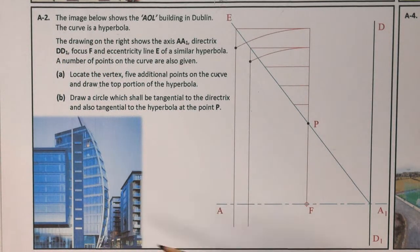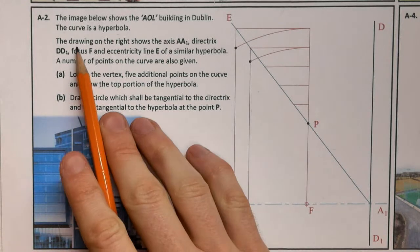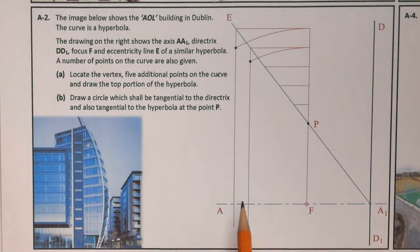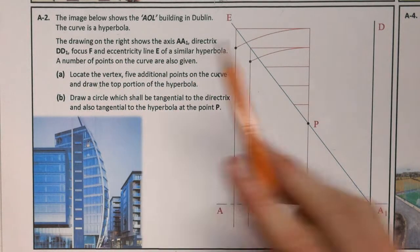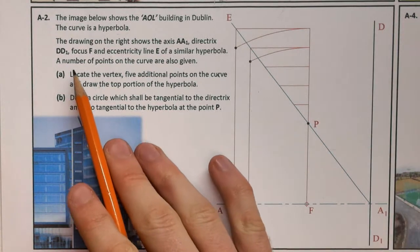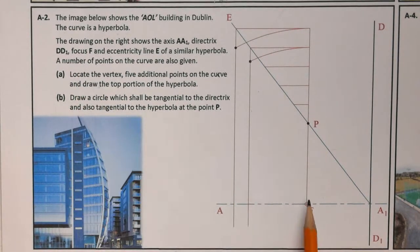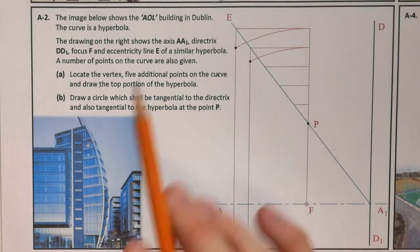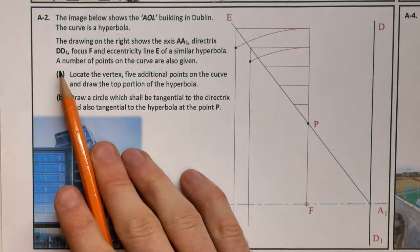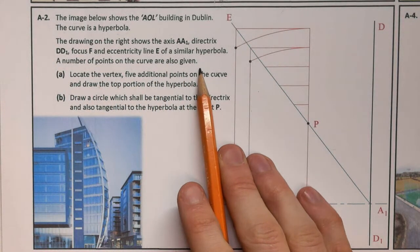Here's our building and our curve being a hyperbola. The drawing on the right shows the axis AA₁, the directrix DD₁, the focus F, and the line of eccentricity for a similar hyperbola. A number of points on the curve have already been given.